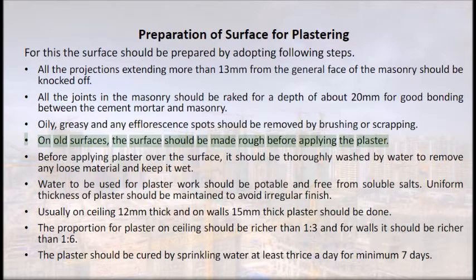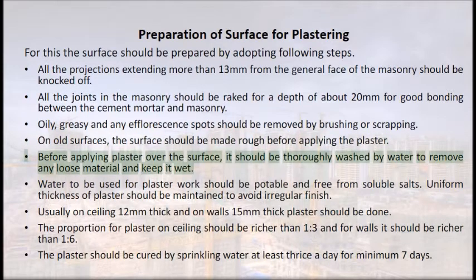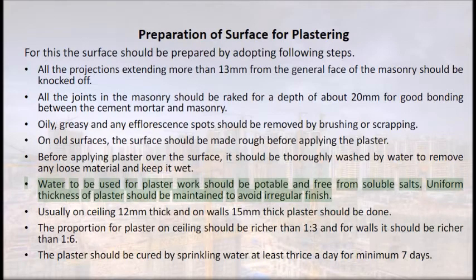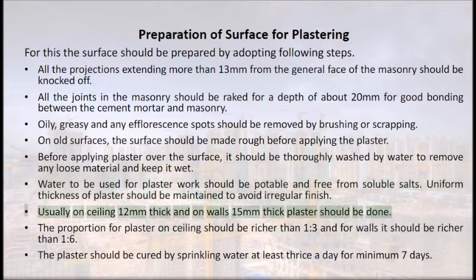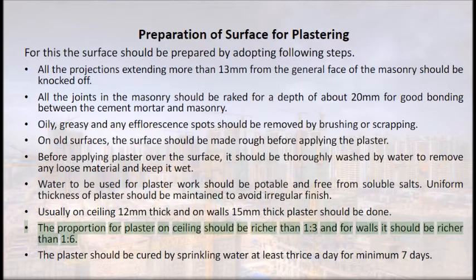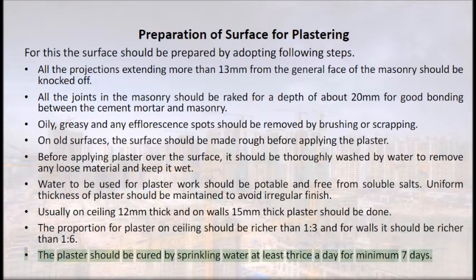On old surfaces, the surface should be made rough before applying the plaster. Before applying plaster, it should be thoroughly washed with water to remove any loose material and kept wet. Water used for plaster work should be potable and free from soluble salts. Uniform thickness of plaster should be maintained — usually 12 mm on ceilings and 15 mm on walls. The proportion for ceiling plaster should be richer than 1:3 and for walls richer than 1:6. The plaster should be cured by sprinkling water at least thrice a day for a minimum of seven days.